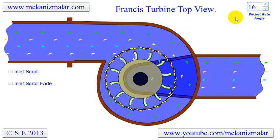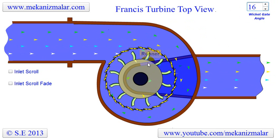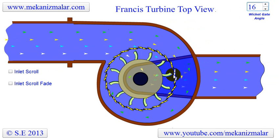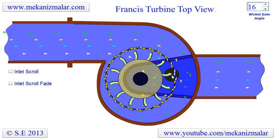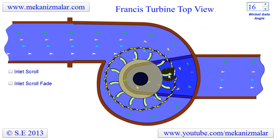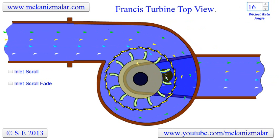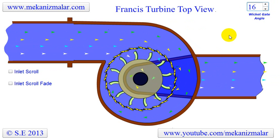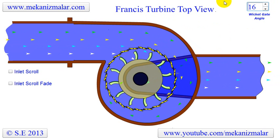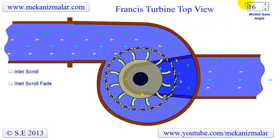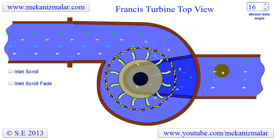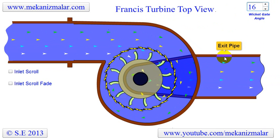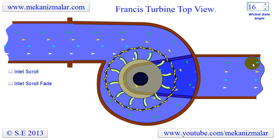After passing through the wicket gates, the water reaches the runner. The water pressure forces the runner to rotate. This rotation motion is transferred to an electric generator, not shown in this animation. The water continues its motion downward under the runner to the exit pipe, which discharges the water to the environment as low-pressure water.